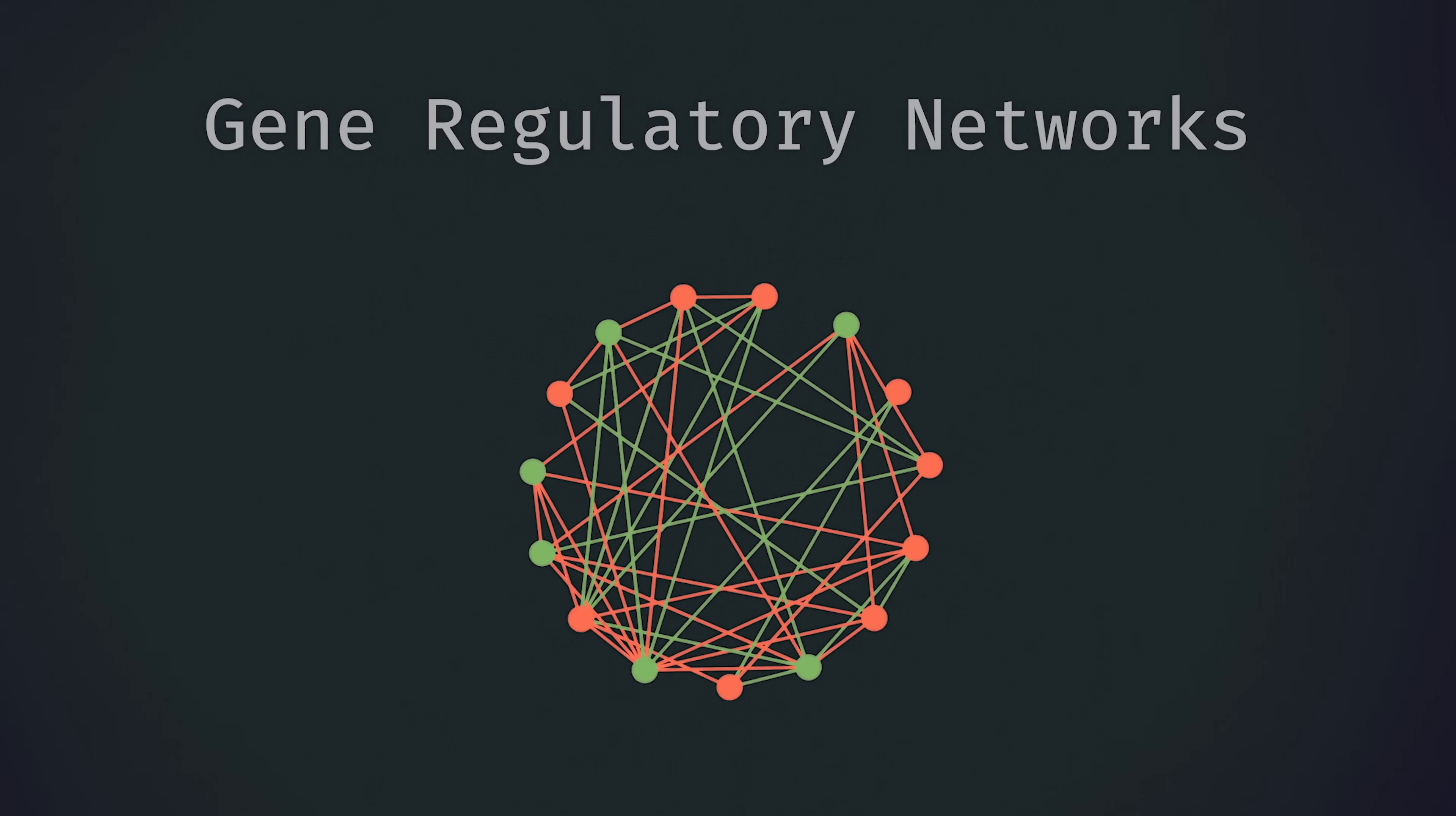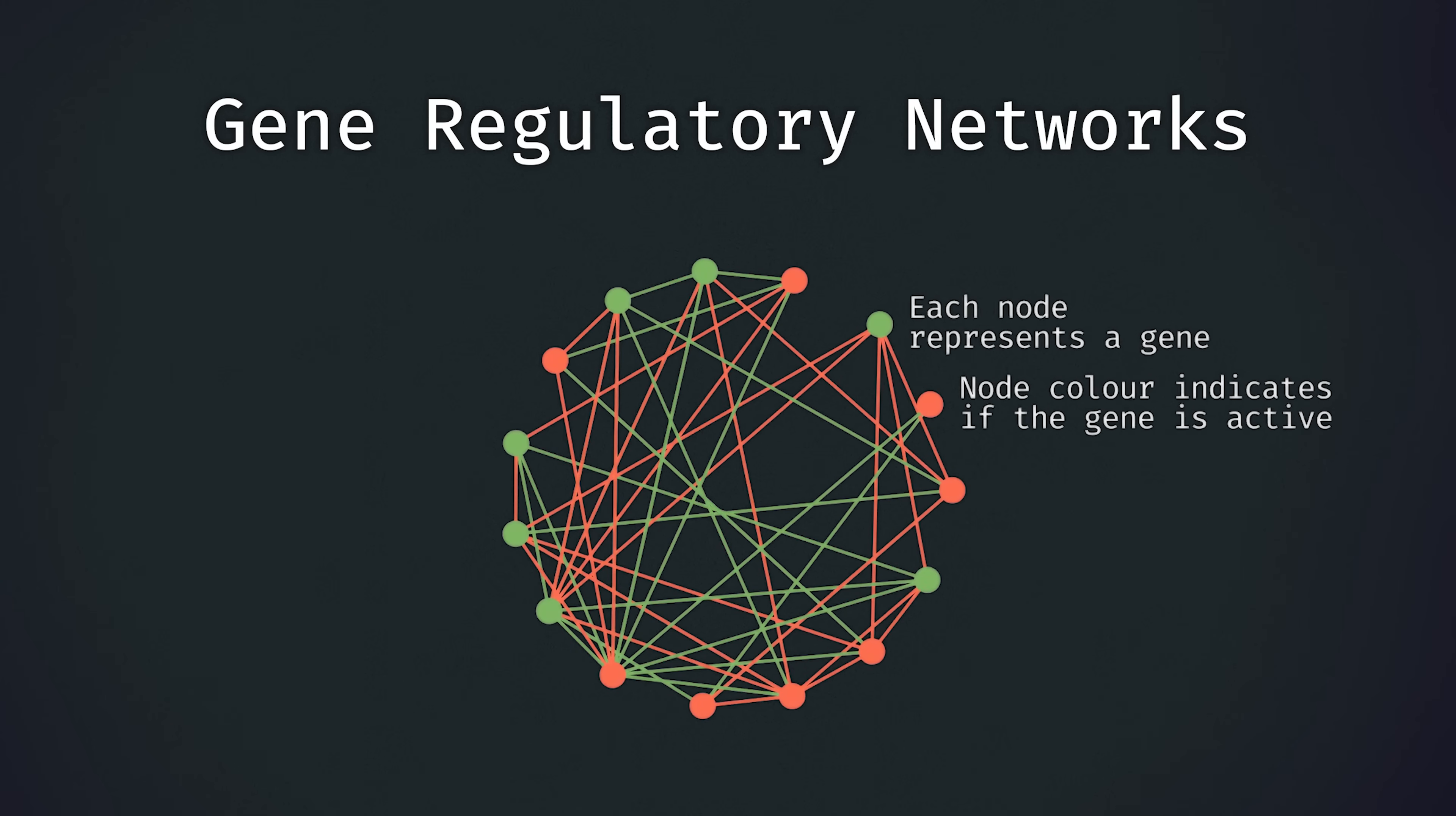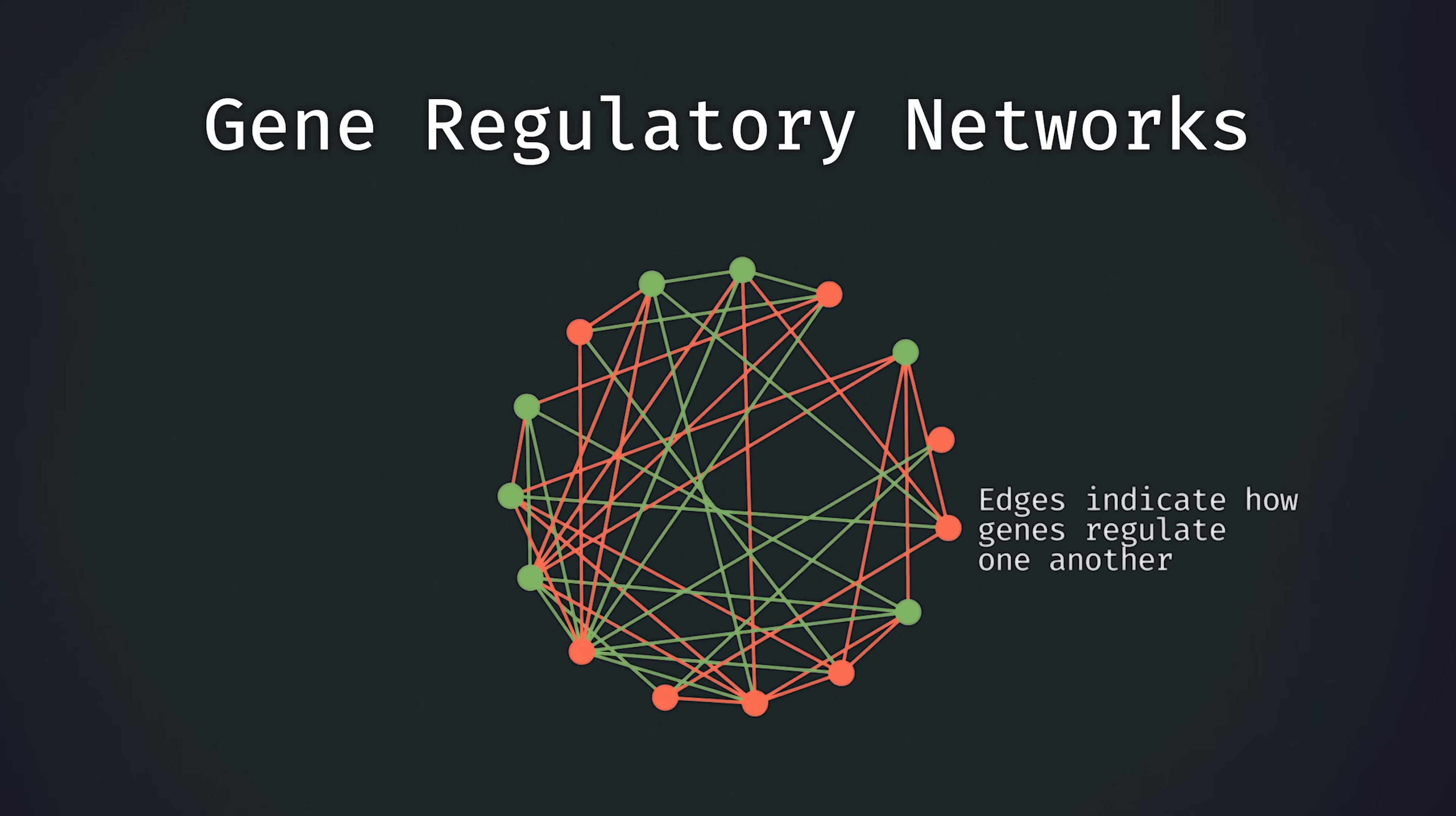We can represent the set of all these interdependencies with a gene regulatory network. Each node represents a gene, and we can colour the nodes according to whether or not they're activated or not. In other words, whether or not they're transcribing DNA to make proteins. The edges represent the regulatory dependencies that genes have on one another, and these put in motion the dynamics of the system.